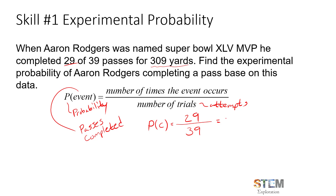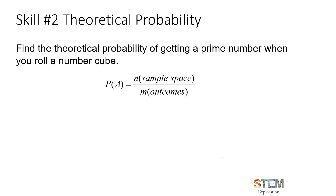So we get approximately 0.736 after rounding. If you wanted to express that as a percentage, that would be easy to do. In terms of relative probability, if the probability of an event equals one, it's always going to happen — 100%. This tells you there's a 73.6% probability that Aaron Rodgers will complete a pass, based on this set of experimental data. That's what experimental probability is.